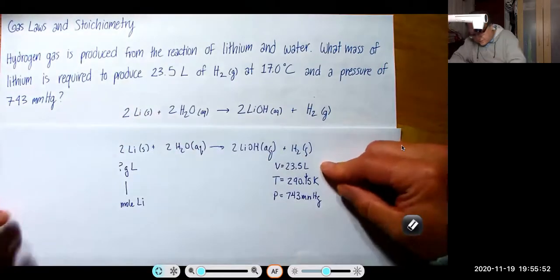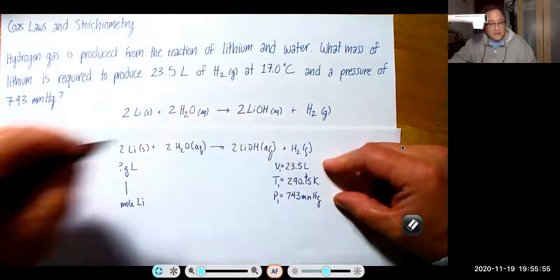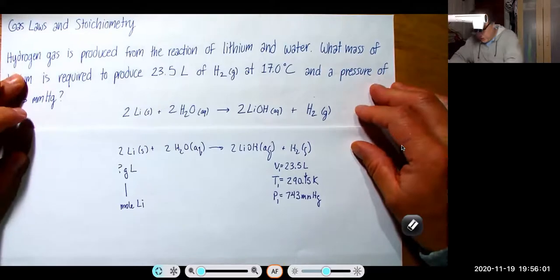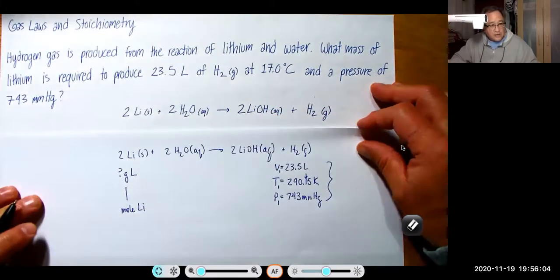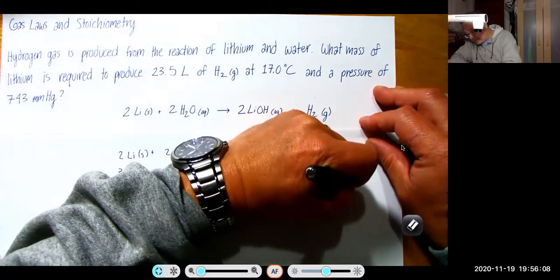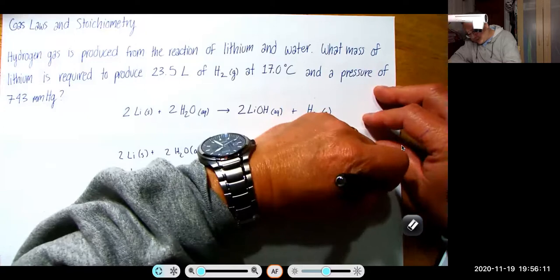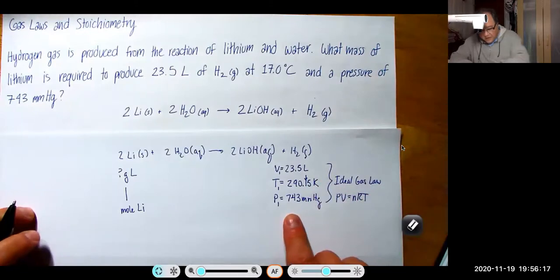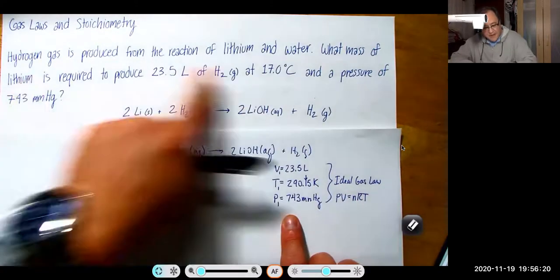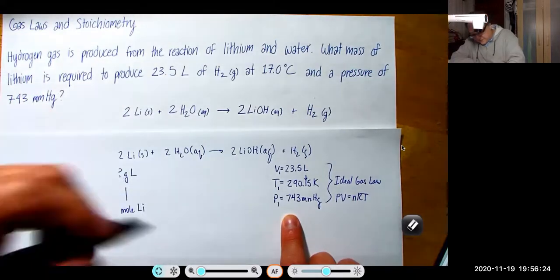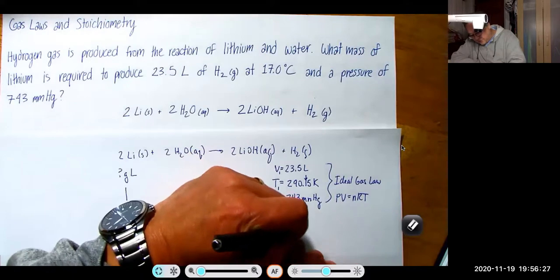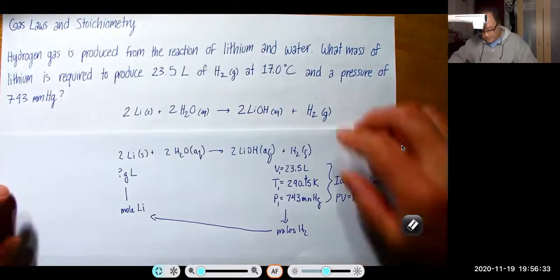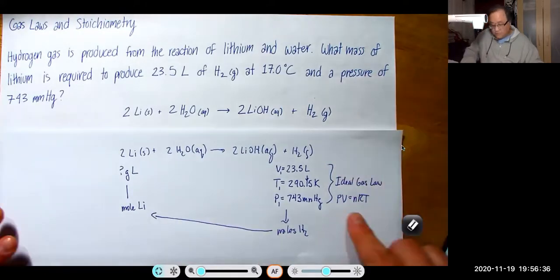So you can see here that if I had called this a V1, a T1, and a P1, there is no V2, there is no T2, and there is no P2. So that means I want to use the ideal gas law here. And so naturally, if we want to know what mass of lithium is produced, we're going to have to get the moles of H2, which will give us the moles of lithium, which then can be used to get the grams of lithium. And how do we get the moles of lithium? We use the ideal gas law.